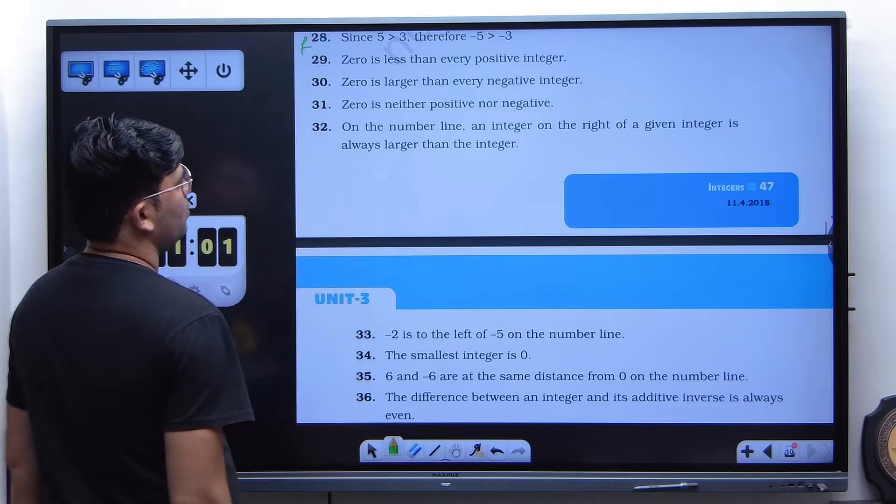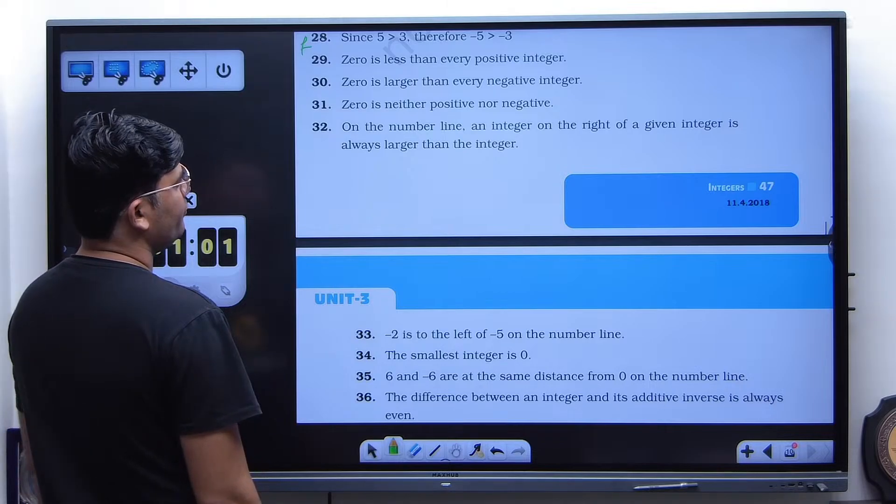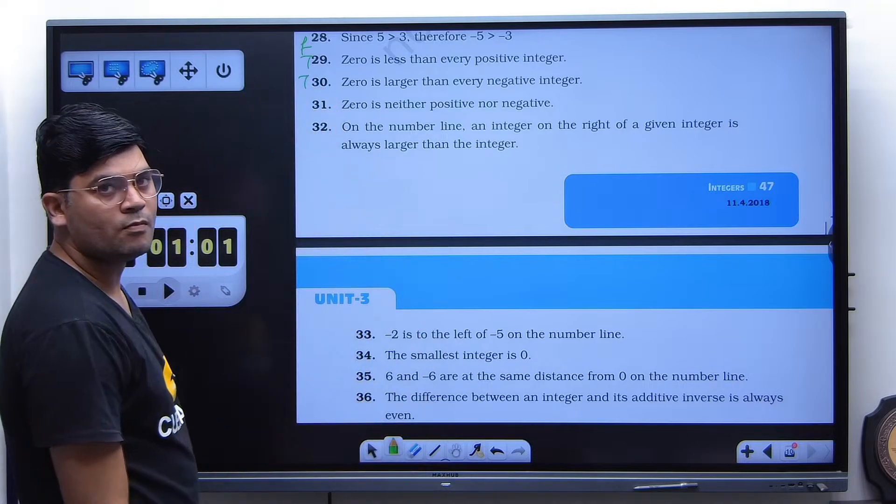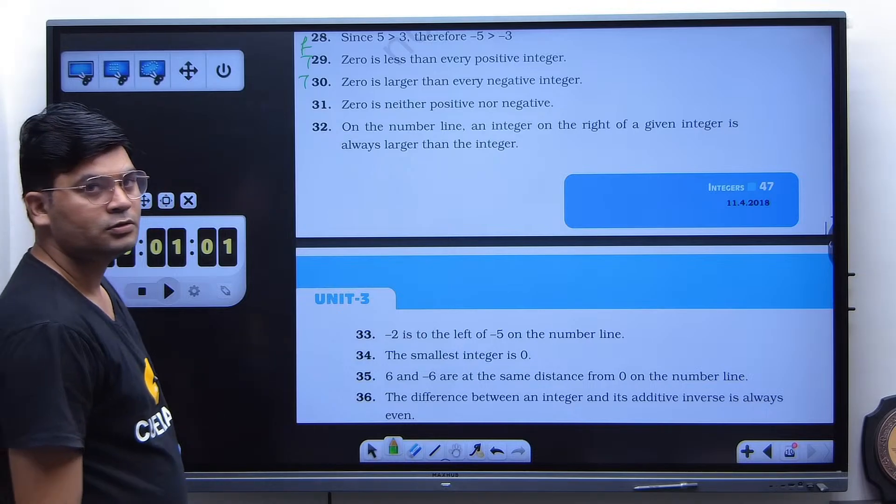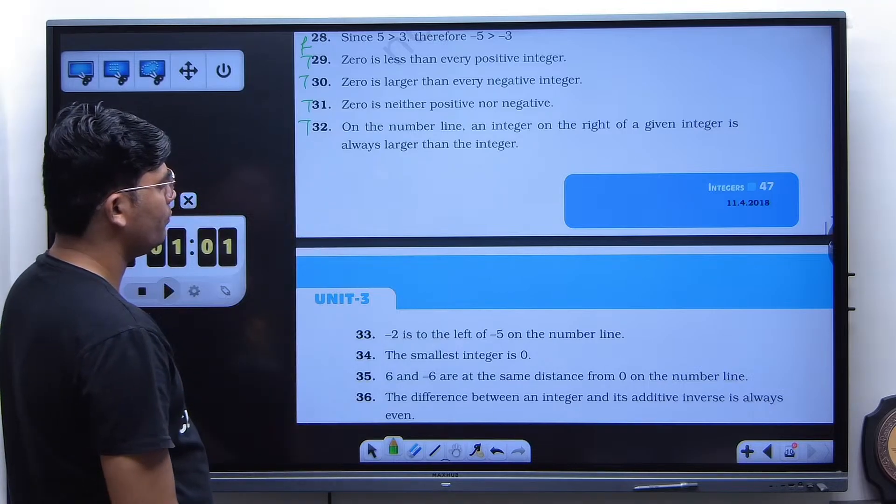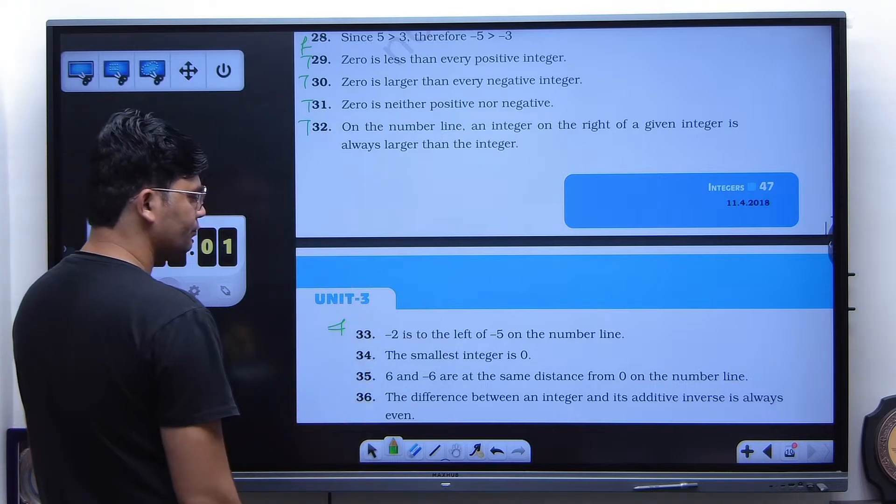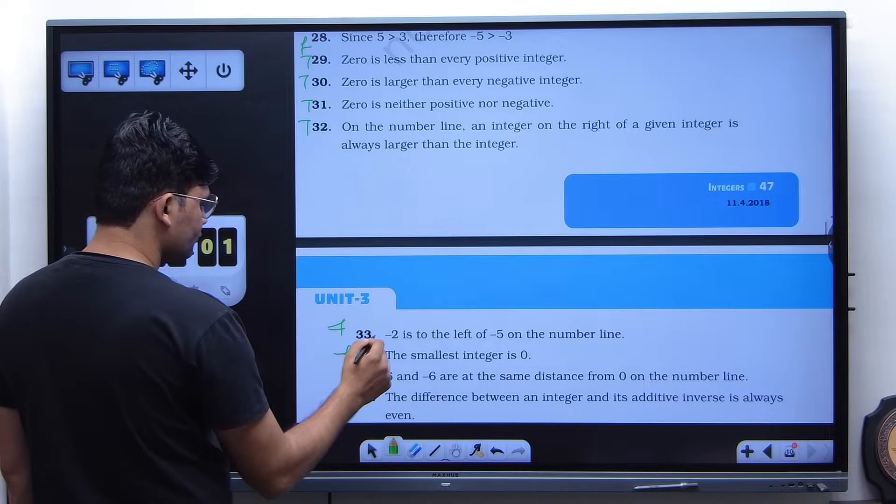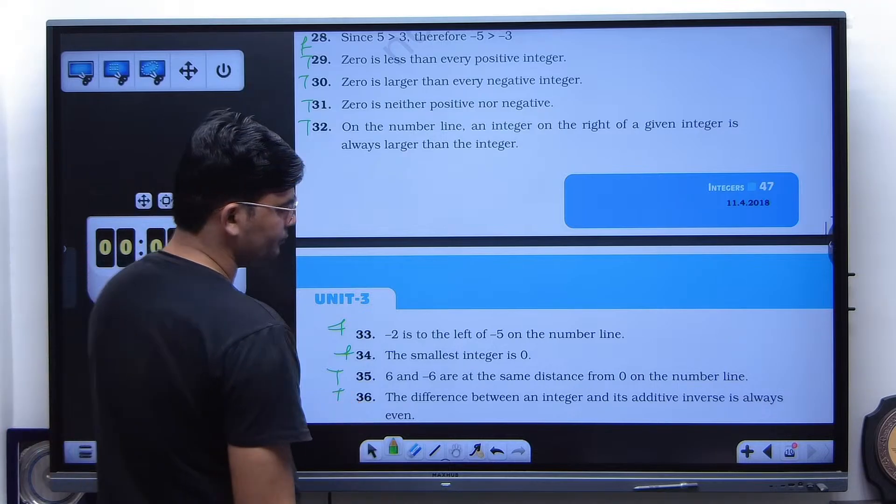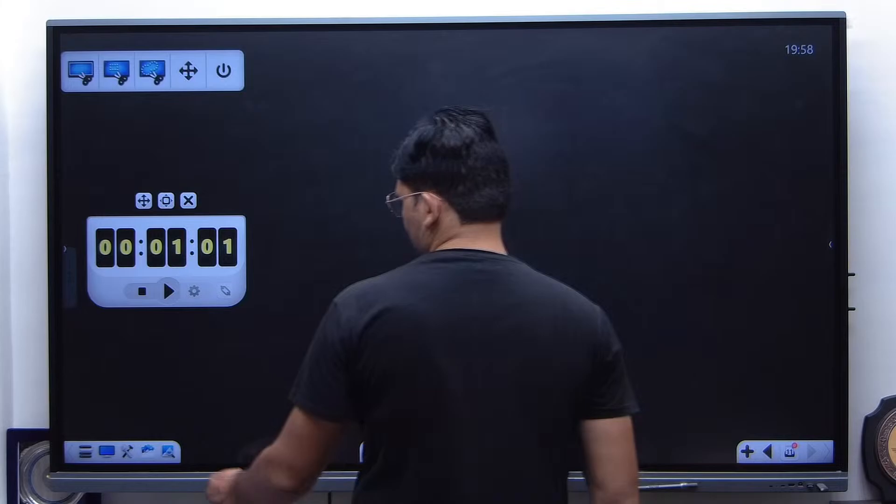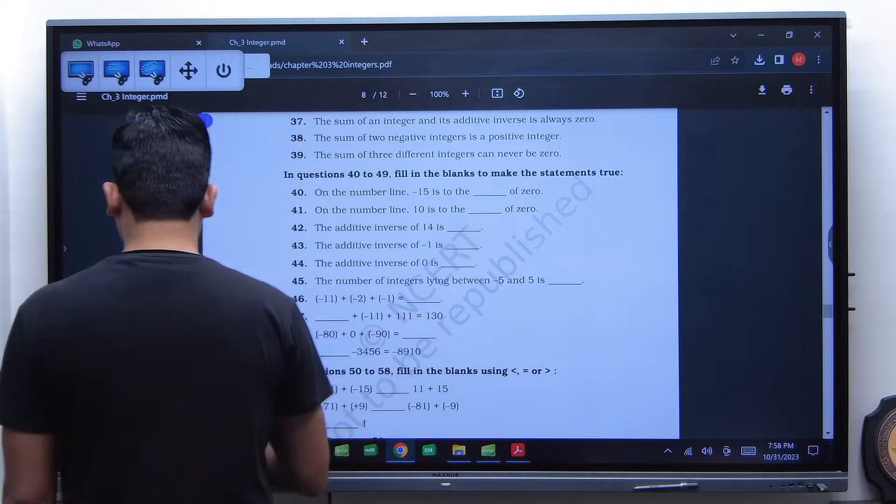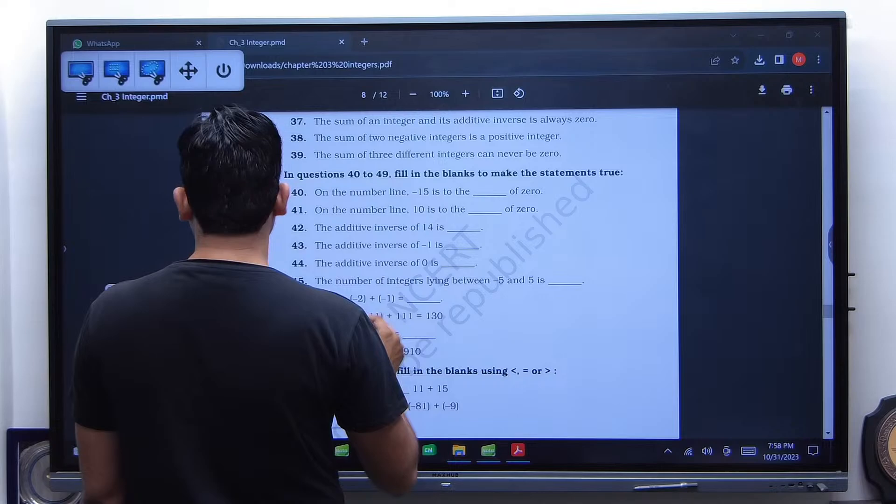False. True, true. True. 31 and 32 is true. False. False. True. True.